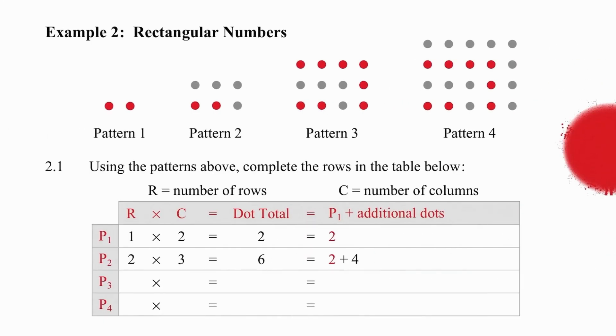Moving on to rectangular numbers, we are going to use the same system of counting. If we look at pattern three, we have three rows. We go to our table and we put the three in. We go now and count our columns as we did before. But now you'll notice that we have one extra column. So our pattern is changing slightly.